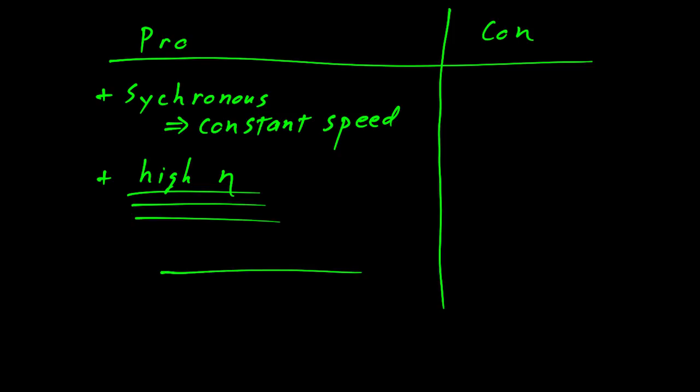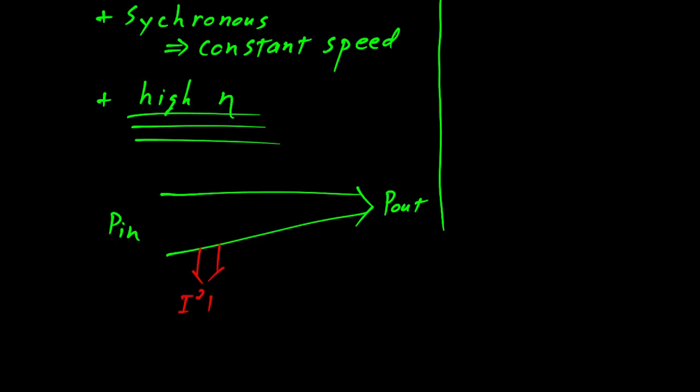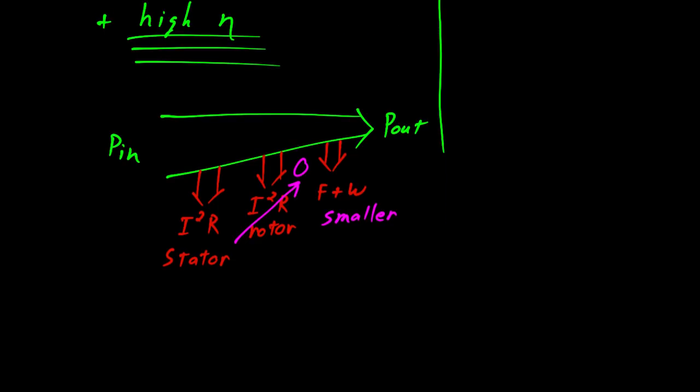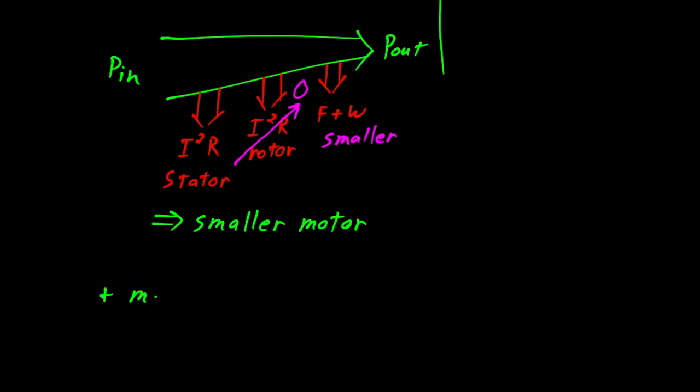You've seen this before. This is a power flow diagram. We have power in on the left and power out on the right, and then we have losses along the way. A typical motor might have some I-squared R losses in the stator, it's going to have some I-squared R losses in the rotor, and it's going to have some friction and windage losses as well. There is no winding on the rotor for this thing, so that goes to zero. And since there's no need to cool off the rotor, you can make the fan smaller, so there's less losses in windage. All this combines to make the motor smaller. In general, you have a very simple and rugged machine.